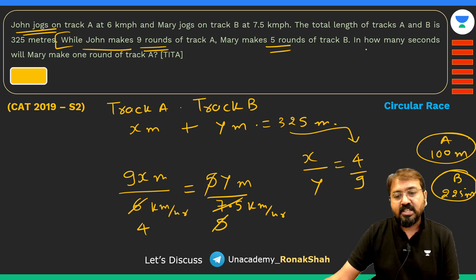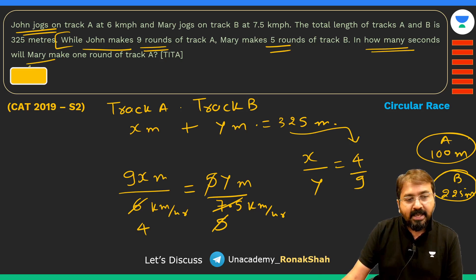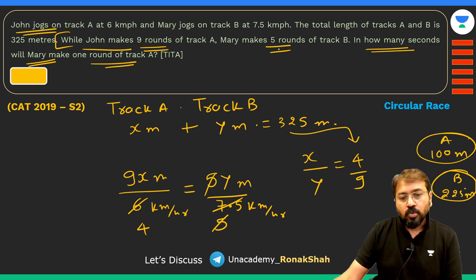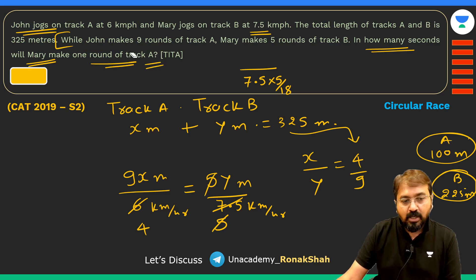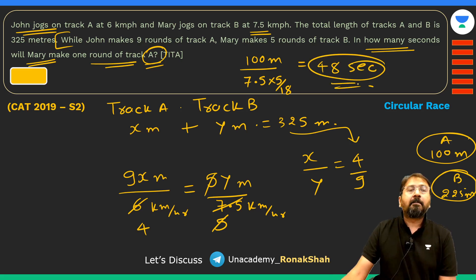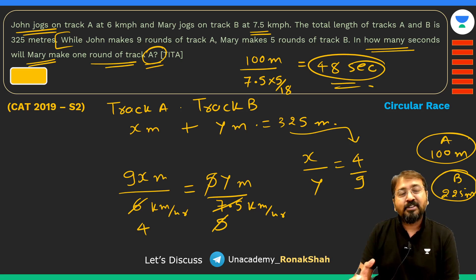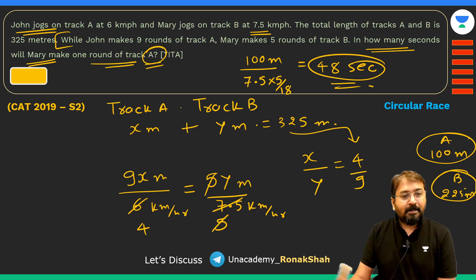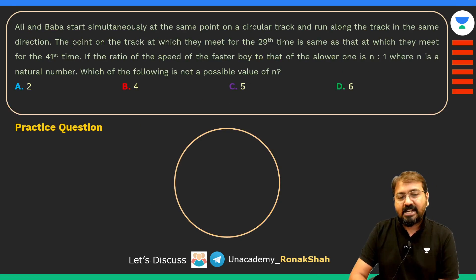Now we need to find how many seconds Mary takes to complete one round of track A. Mary's speed is 7.5 km/h, converting to meters per second by multiplying by 5/18. Track A is 100 meters long. Solving gives 48 seconds as the answer. This question is more of a time-speed-distance problem than a circular race problem, but it appeared in a previous CAT paper.